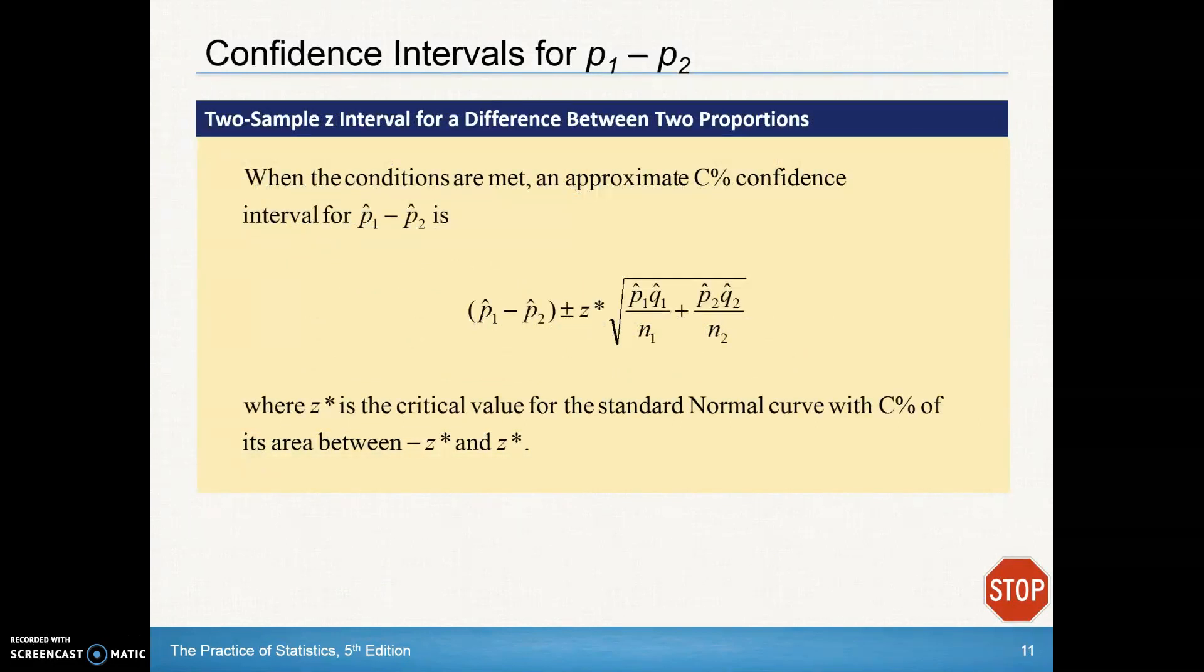When those conditions are met, an approximate C% confidence interval, whatever confidence level you set, would follow this procedure. The difference in our sample proportions, our Z-stars which we talked about before, and we're using their standard error to calculate them.